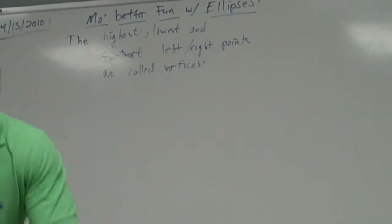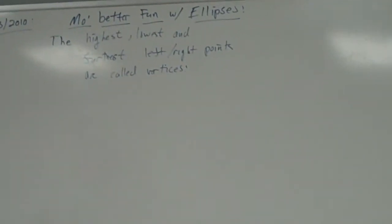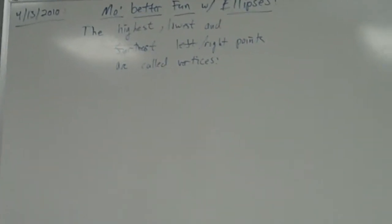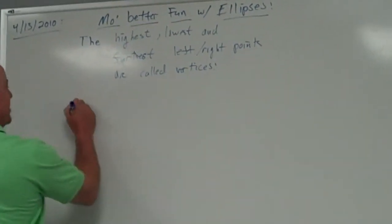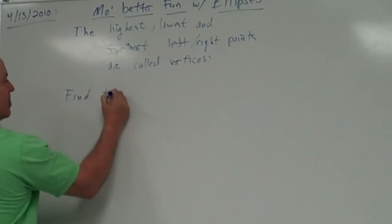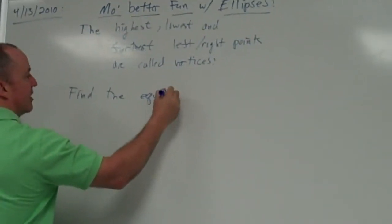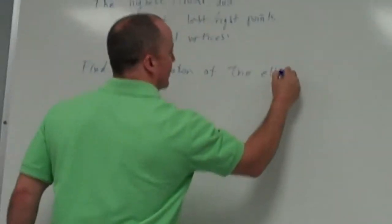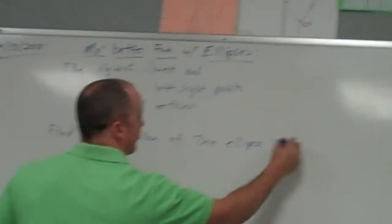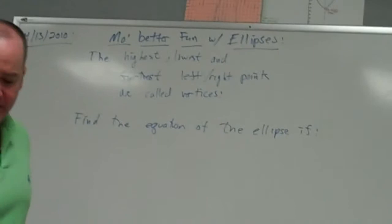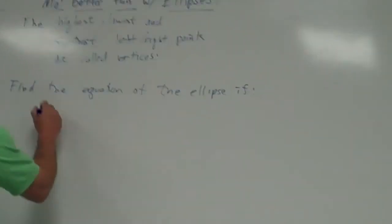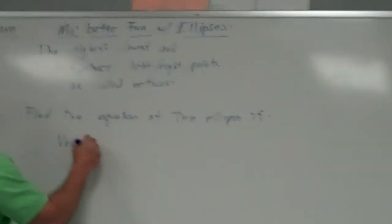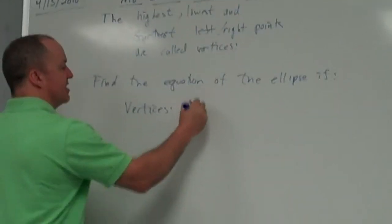So if I say, let's see, if I say find the equation of the ellipse if, okay, find the equation of the ellipse if the vertices are at, there are vertices at 0, comma, plus or minus 5,